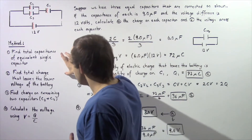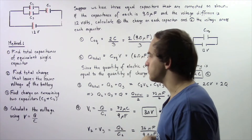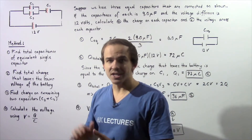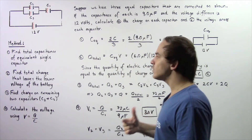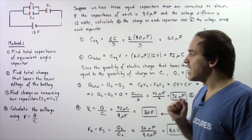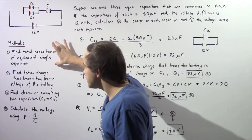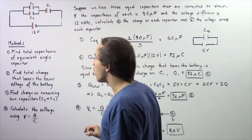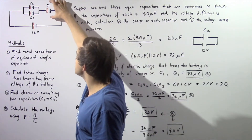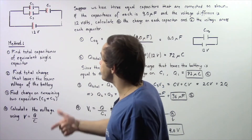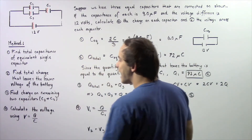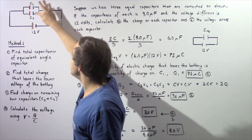Let's look at the method we're going to follow to solve our problem. We'll follow four steps. In step one, we find the total capacitance of the equivalent single capacitor that replaces all three capacitors — a result calculated in the previous lecture. In step two, we find the total charge that leaves the lower voltage side of the battery, which equals the charge on capacitor one. In step three, we find the remaining charges on capacitors two and three. In step four, we calculate the voltage across each capacitor using Q = CV.